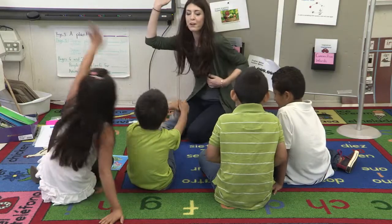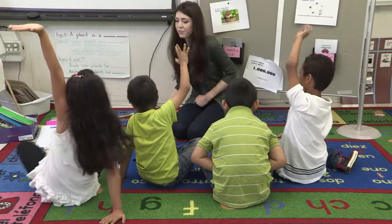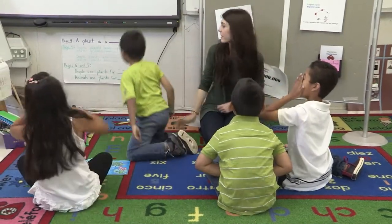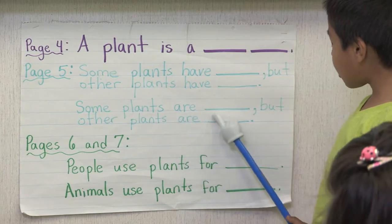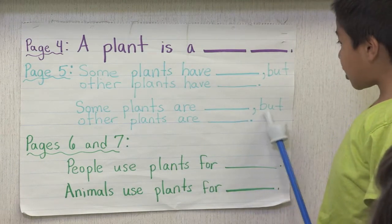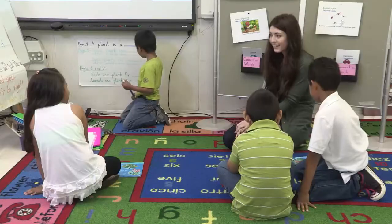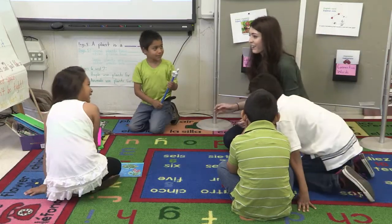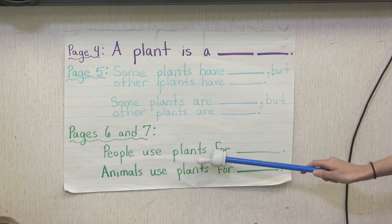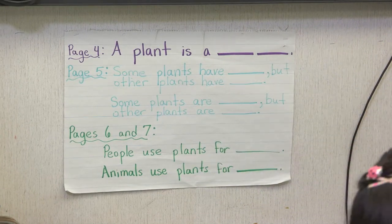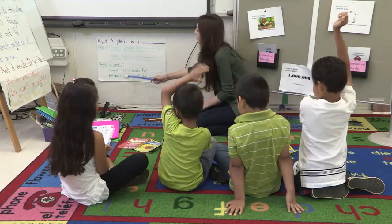Raise your hand if you and your partner came up with one that you want to share with everybody. All right, Uriel, you want to come up and point to your sentence and tell us what it is? Some plants are big, but other plants are small. Excellent! We did read about that on page five, didn't we? Let's read those together. People use plants for food.